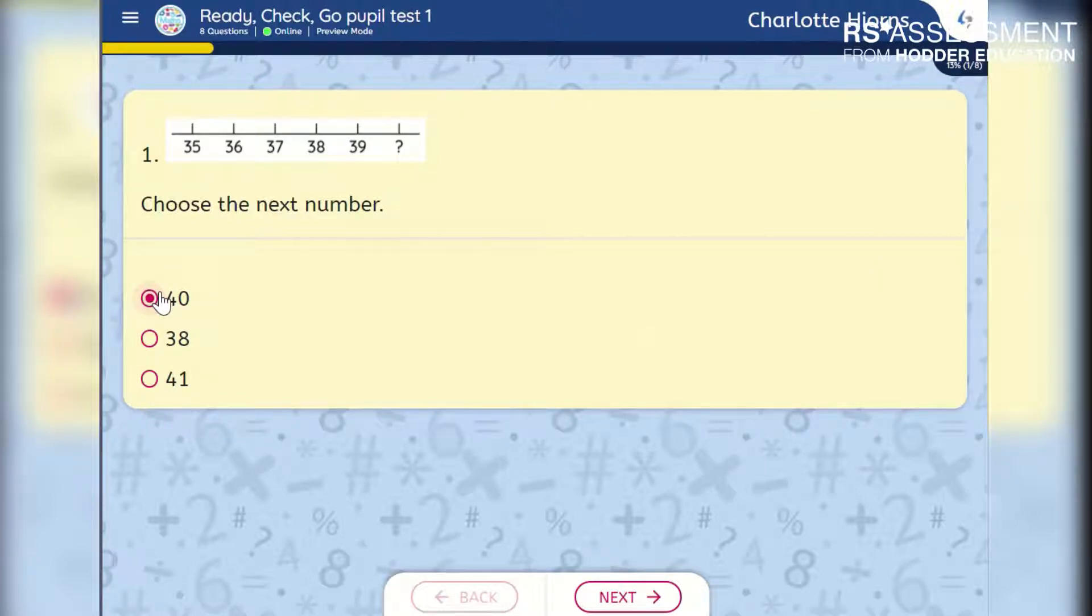You may have noticed that when I selected the answer, a yellow bar appeared at the top. This represents progress through the test and shows where pupils are at a glance to teachers administering the test. To move to the next question, simply click Next.